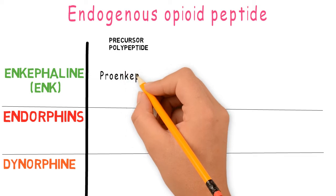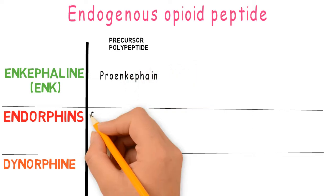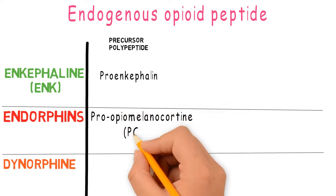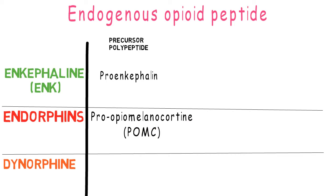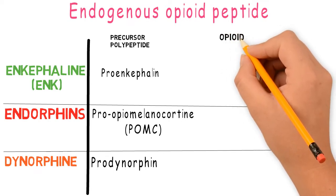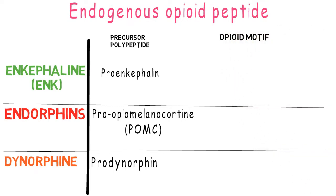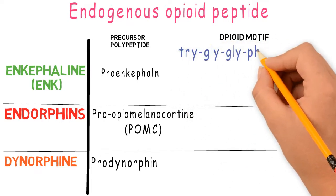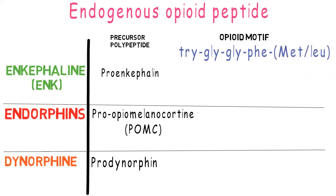The first precursor is pro-enkephalin. The next is pro-opiomelanocortin (POMC), which is also a precursor for certain non-opioid peptides including ACTH (adrenocorticotropic hormone), melanocyte-stimulating hormone, and lipotropin. The last precursor, for dynorphin, is pro-dynorphin. All three opioid peptides share a common amino acid sequence called the opioid motif.